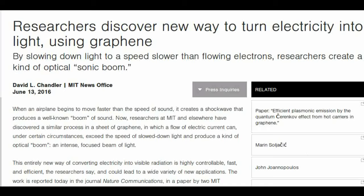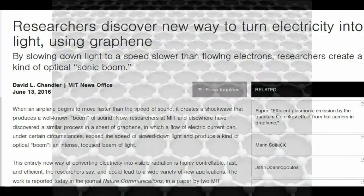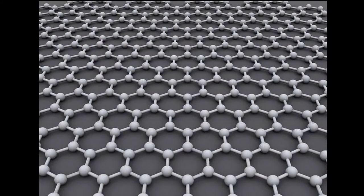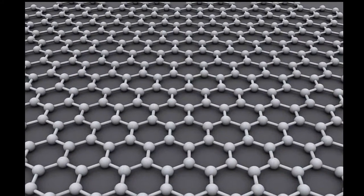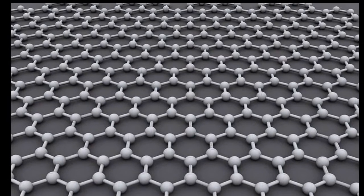The new findings started from a fascinating observation. The researchers found that when light strikes a sheet of graphene, which is a two-dimensional form of the element carbon, it can slow down by a factor of a few hundred.